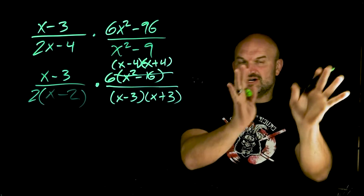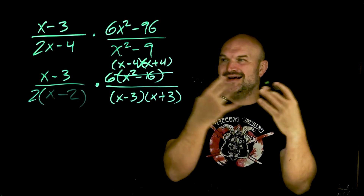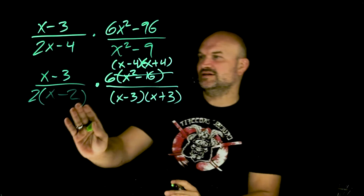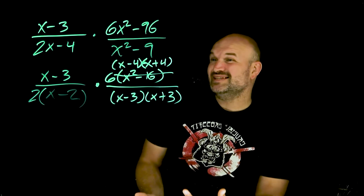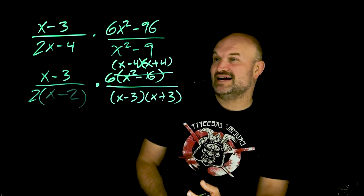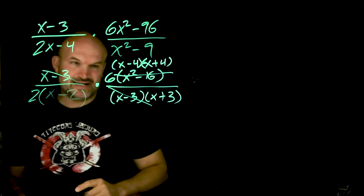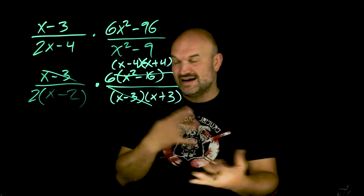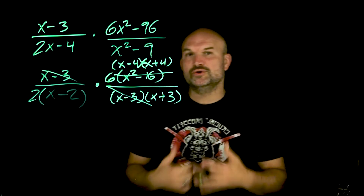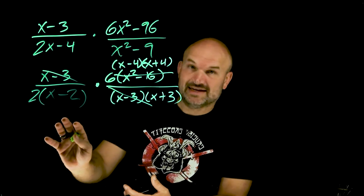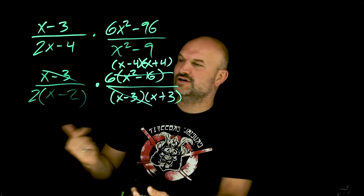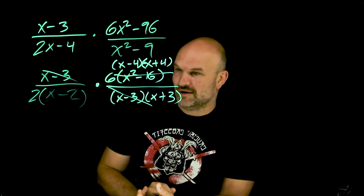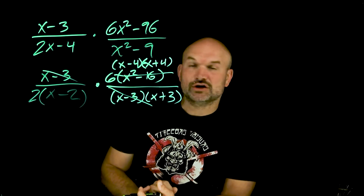Since all expressions are separated by multiplication, I can apply the division property. The only thing that divides out is the (x minus 3) in the numerator and denominator. It's really important to remember: when writing our final solution, we must include all values that are undefined — the values that make your denominator equal to zero. Even though (x minus 3) got divided out, per the original expression it still cannot be an included value.